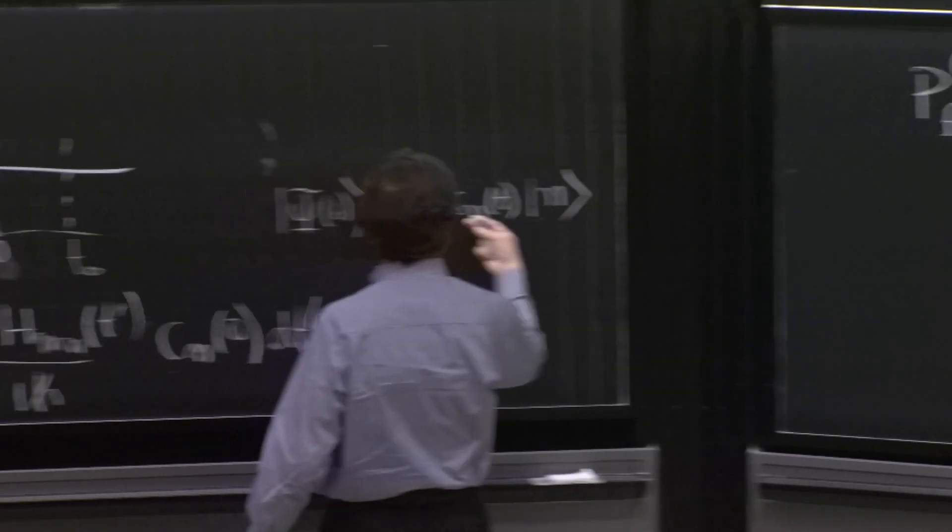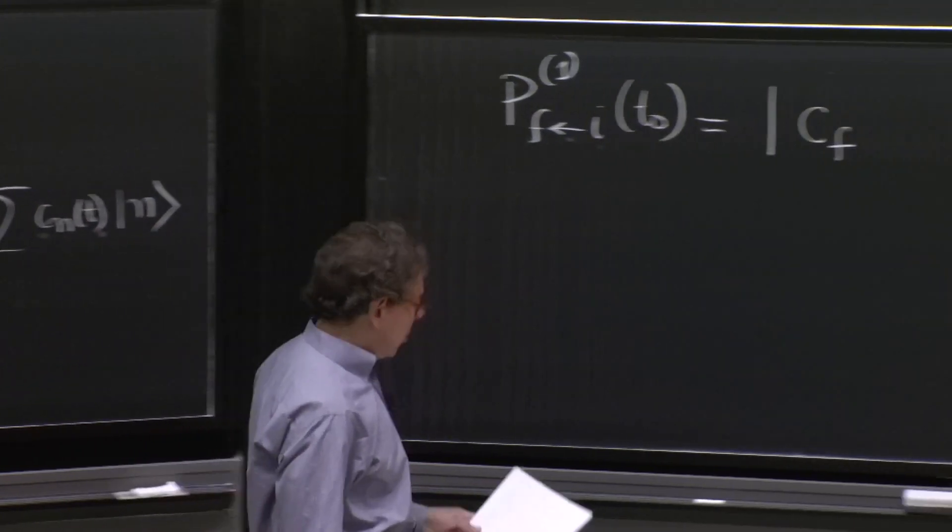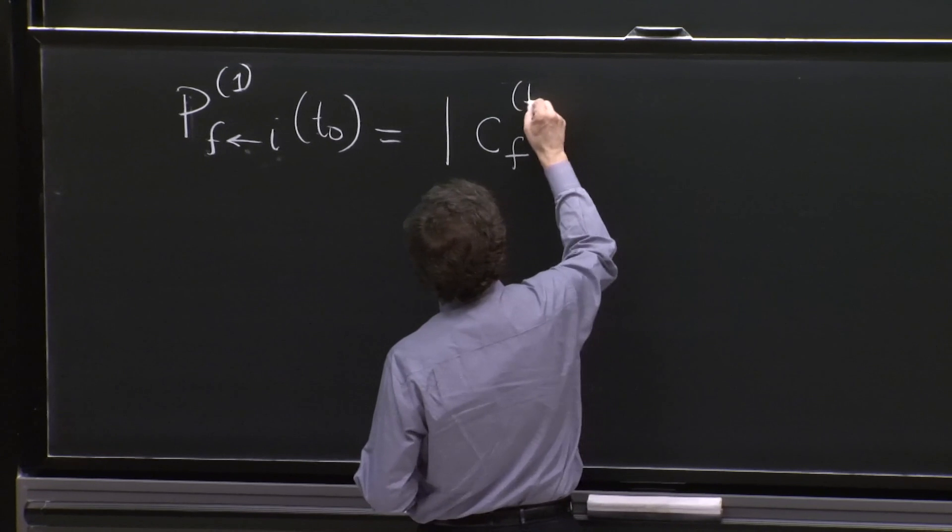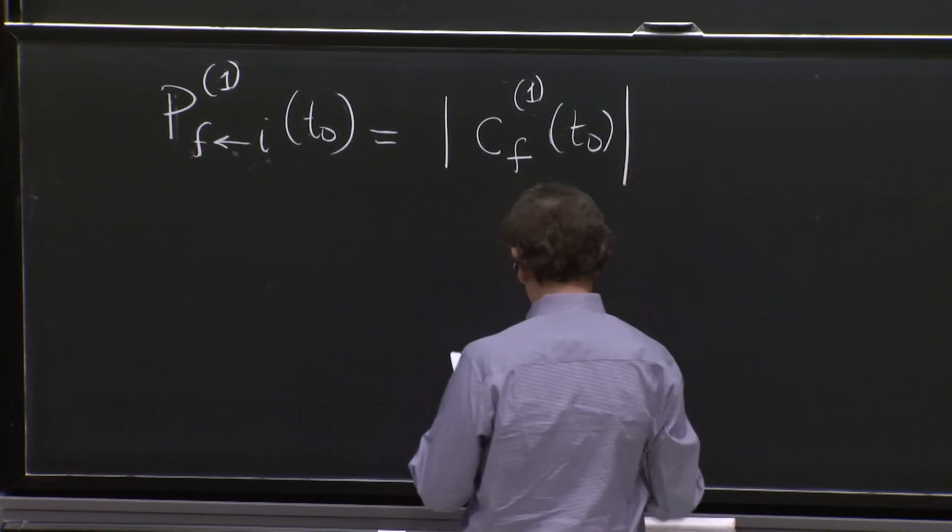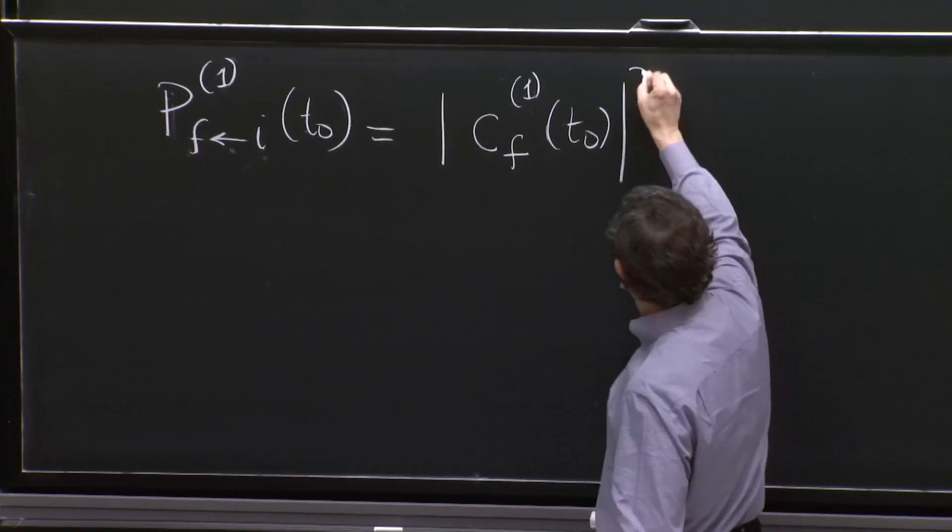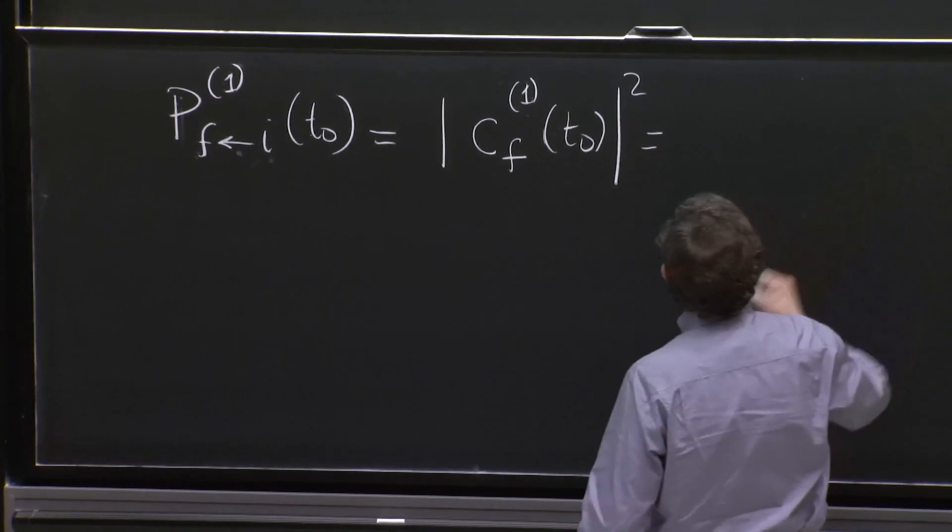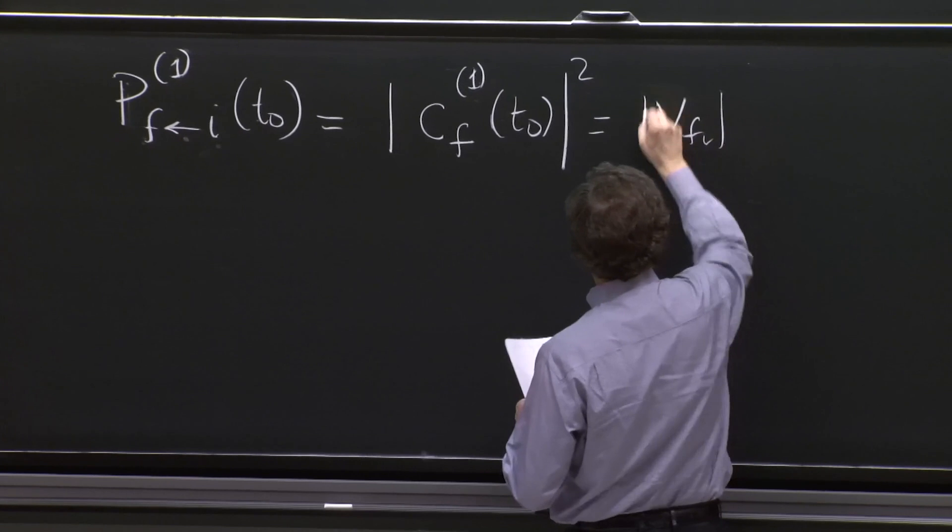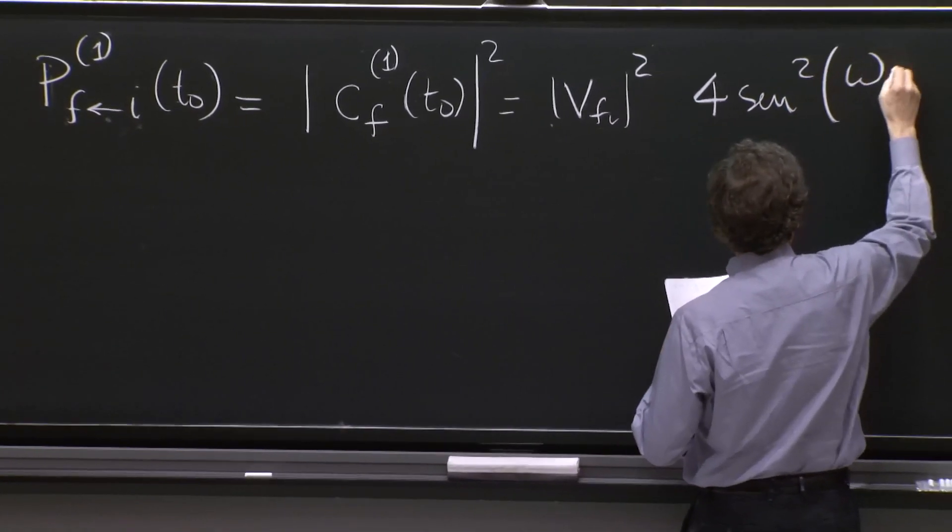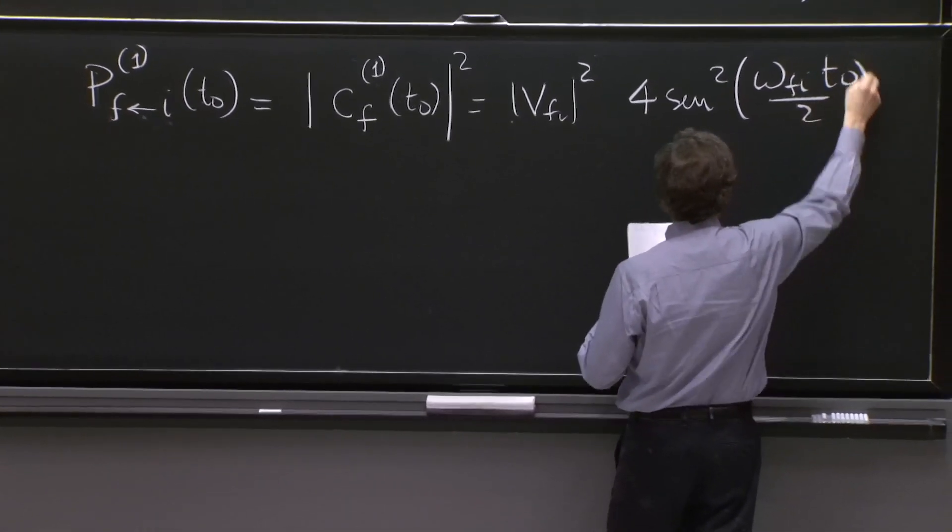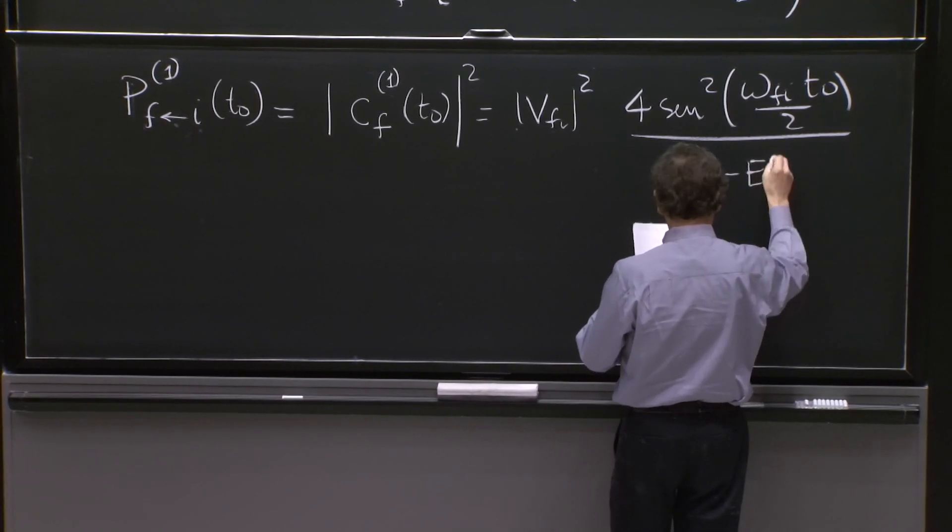The probability to be found in the final state has to do with the norm square of this thing. So it's this. That's part of what was reviewed yesterday, squared. So what do we get? That simplifies quite a bit. We get vfi squared times 4 sine squared omega fi t naught over 2 over Ef minus Ei squared.